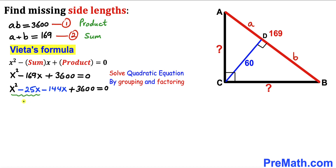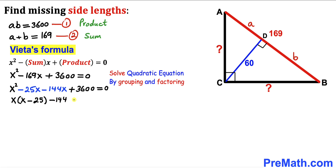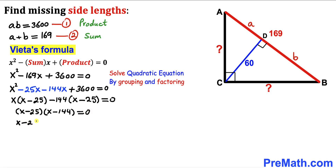Replacing negative 169x with those two terms, we can see that between the first two terms x is in common, and between the next two terms negative 144 is in common. So we factor to get x times (x minus 25), then factor out negative 144 to get (x minus 25) equals zero. These factors are identical, so we write (x minus 25)(x minus 144) equals zero. Separating them: x minus 25 equals zero, and x minus 144 equals zero.